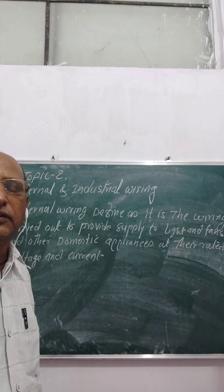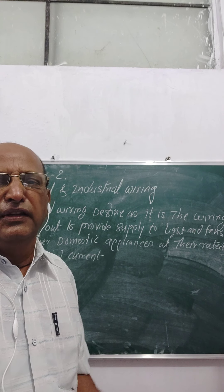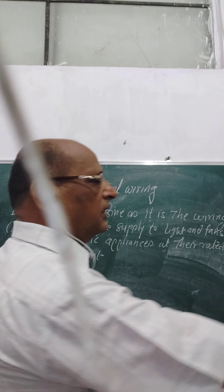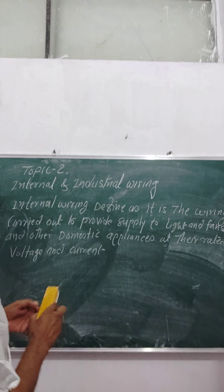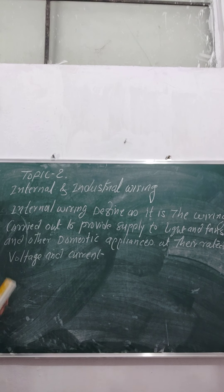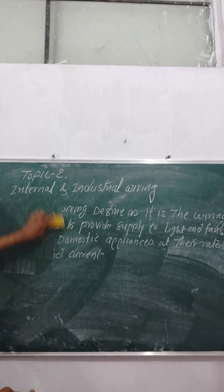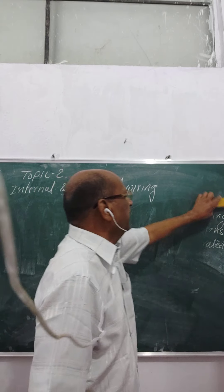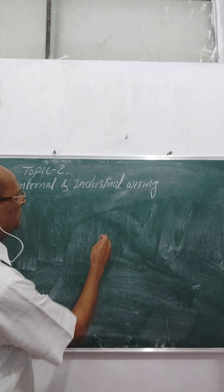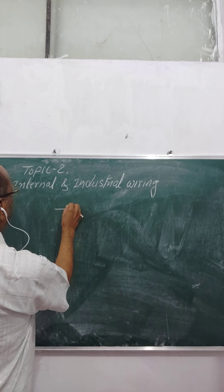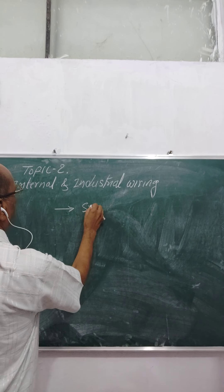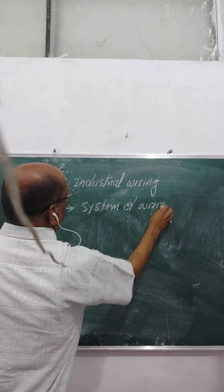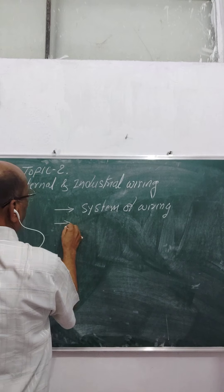This particular topic consists of two portions: one is internal wiring and another is industrial wiring. In internal wiring, there are two types of classification. First is the system of wiring, and second is the methods of wiring.